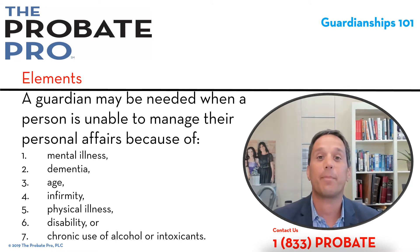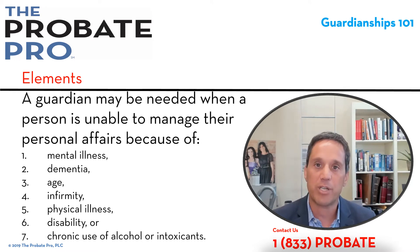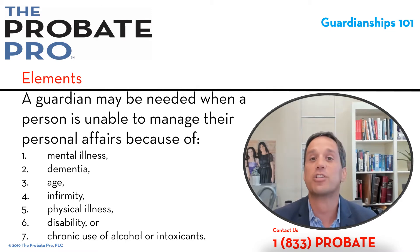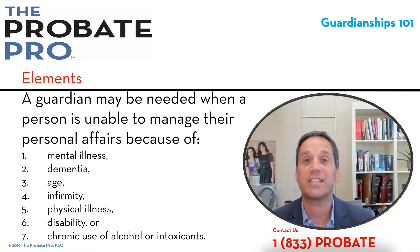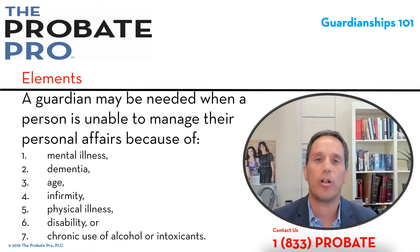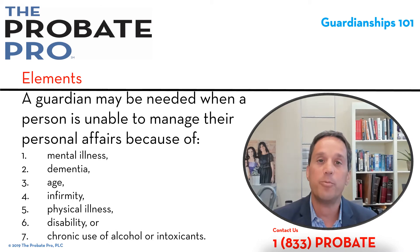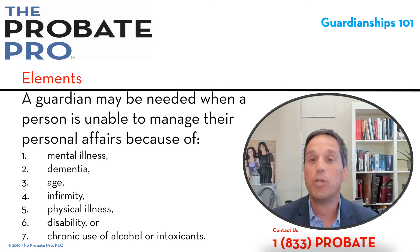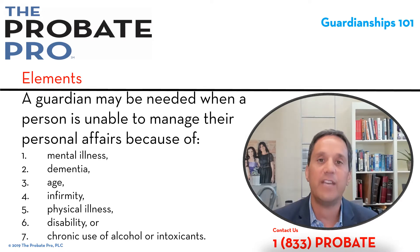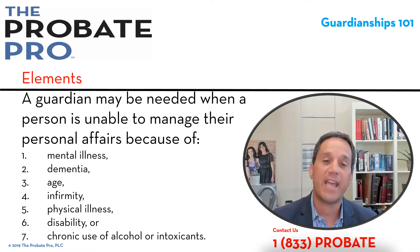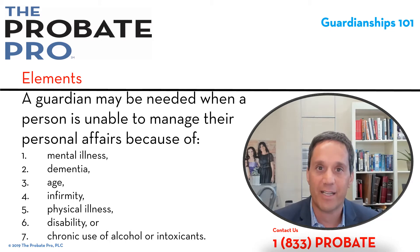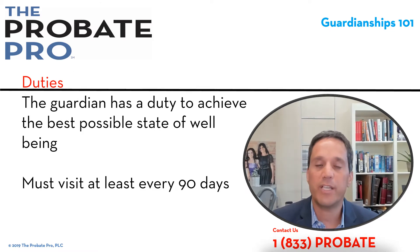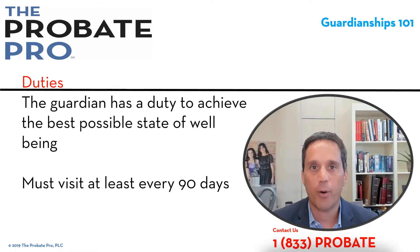The elements to establish the basis for a guardianship are as follows. A guardian may be needed when a person is unable to manage their personal affairs because of mental illness, dementia, age, infirmity, physical illness, disability, or chronic use of alcohol or intoxicants. Interestingly, age itself could be a basis, meaning you may not lack capacity but may be old enough that the need for guardianship exists. In Michigan, this standard is met through clear and convincing evidence.